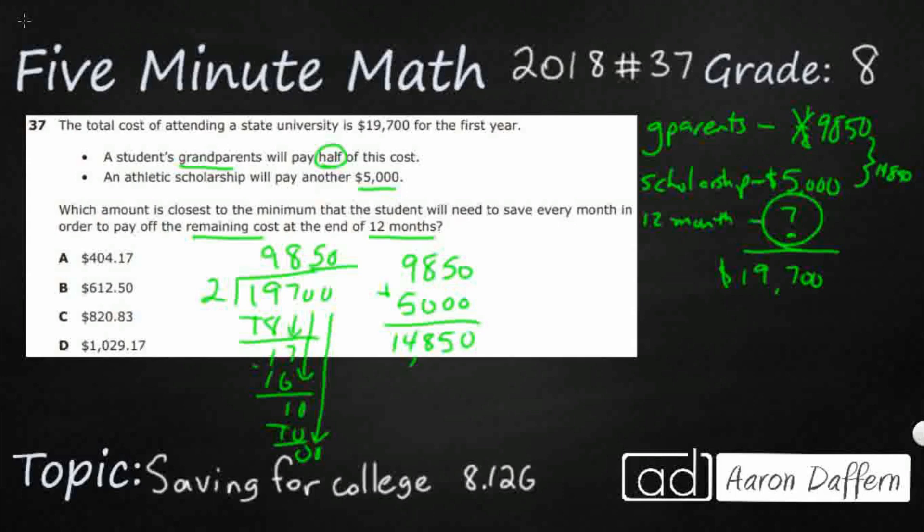So in order to save for the rest over 12 months, we need to figure out how much the rest is. So now we're going to take the total cost, $19,700, and subtract from that $14,850. Quite a bit of borrowing. You can use your calculator if you really want to, but we know how to do this by hand. It's going to be $5,600, it's going to be $4,850.